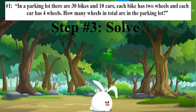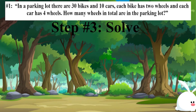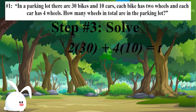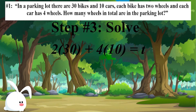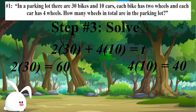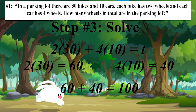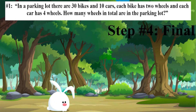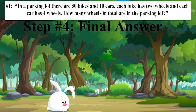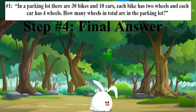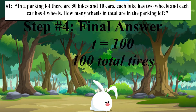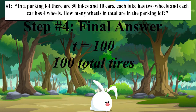Step 3 is to simply solve the equation that we just came up with. We're going to use PEMDAS on that. When we look at PEMDAS, the first thing we have to do before we add is to multiply, left to right. So we're going to multiply 2 times 30 to get 60, and then multiply 4 times 10 to get 40. Now that we have those values, we can use PEMDAS again and just add them up. 60 plus 40 equals 100. And step 4, our final answer. We got 100, so t equals 100, meaning that there are 100 total tires in the parking lot.